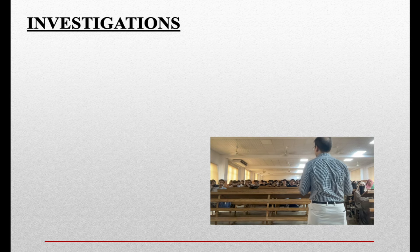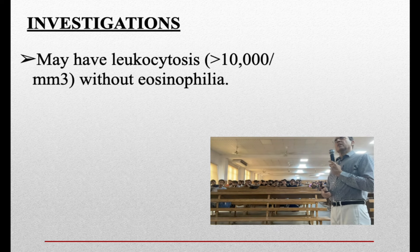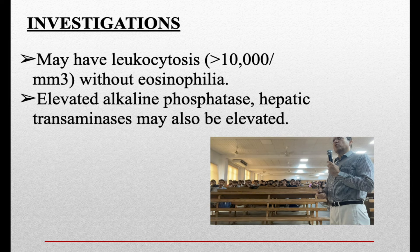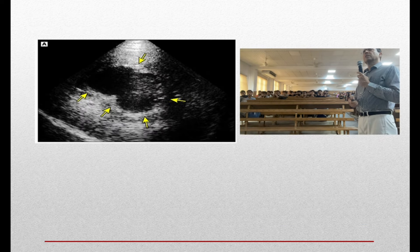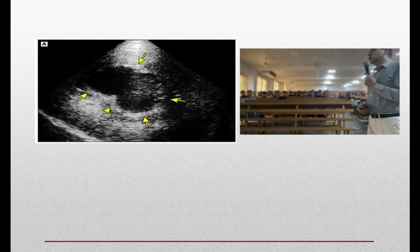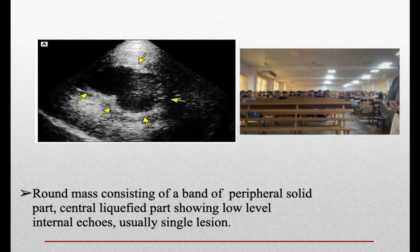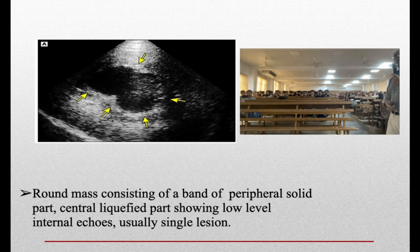CBC can help differentiate: in pyogenic abscess there is neutrophilic leukocytosis, whereas in amoebic abscess there may not be. Alkaline phosphatase may be elevated. Ultrasound shows a fluid-filled cavity — a round mass with a peripheral solid part and a central liquid part showing internal echoes, usually a single lesion. The second imaging investigation of choice is CT scan, which clearly shows the edematous liver around the abscess and the liquefied center.